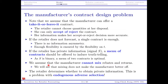We assume that the manufacturer cannot mix rebates and returns, so the manufacturer only needs to offer either a rebate or a return. Later we will show that mixing them does not allow the manufacturer to earn more. The retailer determines whether to obtain private information — the retailer can choose whether to do forecasting, and only after forecasting is there private information. So this is a problem with endogenous adverse selection: whether there is an adverse selection problem depends on the player's decision.